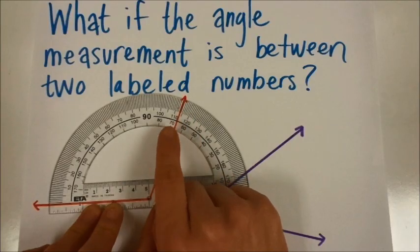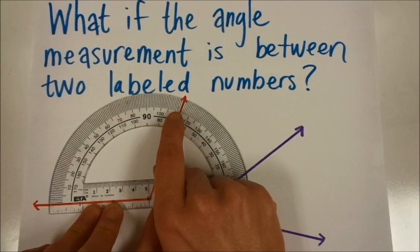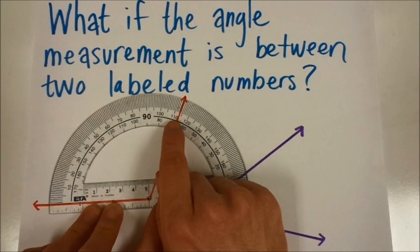So it's growing in this direction and I can see that it's a number between 110 and 120. It's getting bigger here and it is going about one, two, three marks after the 110, so that would be 113.